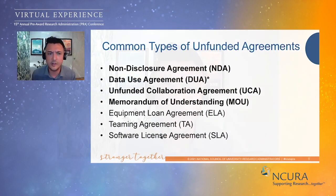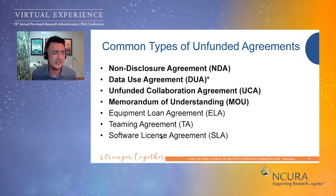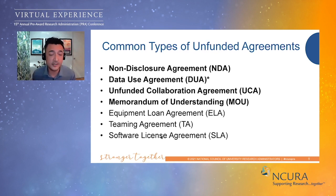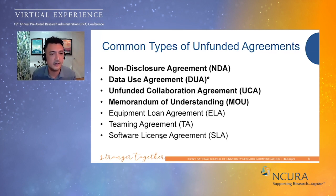The last type is software licensing. Especially in engineering and computer science, we have PIs, researchers, and postdocs trying to obtain free rights to software from a company or non-profit. Many of those organizations will ask us to sign off on a contract before we even have access to the software itself. That covers the main types — does anyone have anything to add?